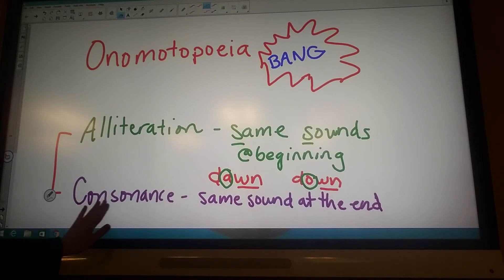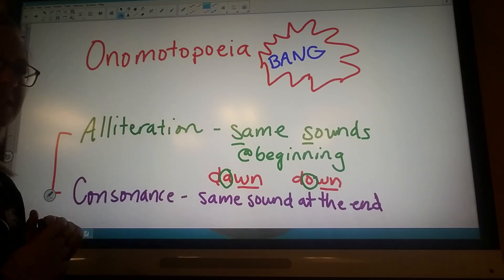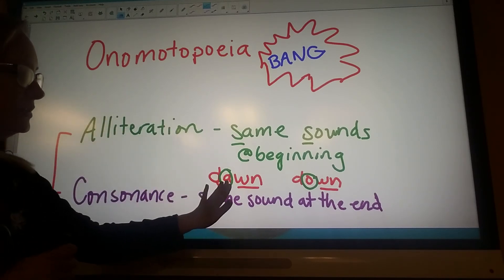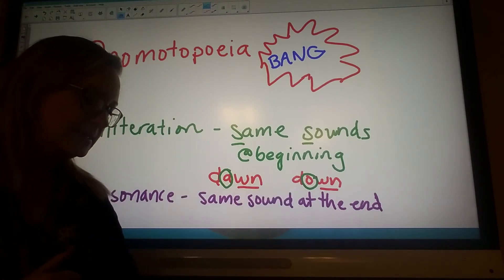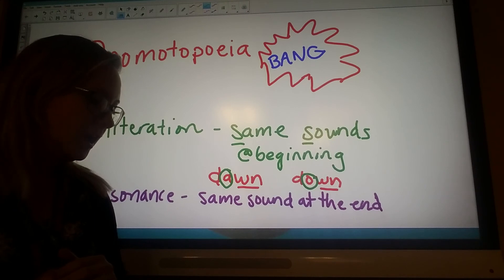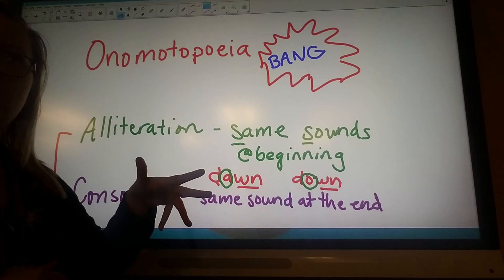And then the other thing that he uses is consonance, which is where instead of having the same sound at the beginning, you have the same sound at the end. And it's almost like a rhyme, but they're going to use different vowels. So the example they give you on page 377 is dawn goes down. So dawn and down, dawn is like when the sun comes up in the morning, right?